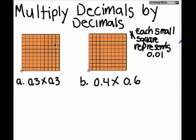This is a 10 by 10 decimal model, which you can draw on your own sheet of paper. Each small square represents 0.01 hundredths.